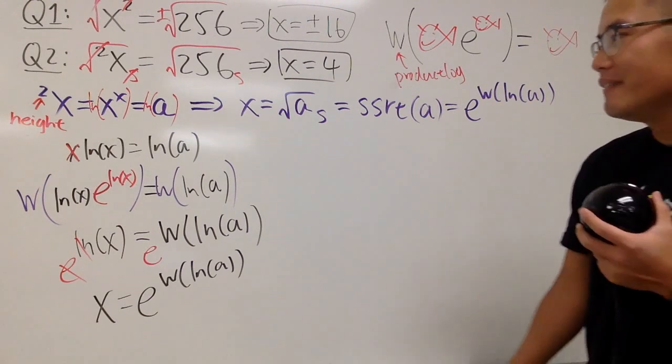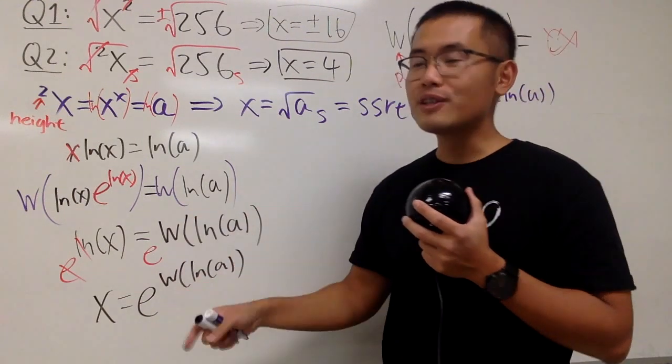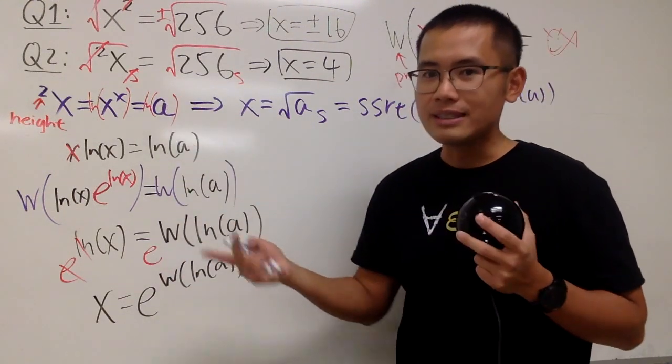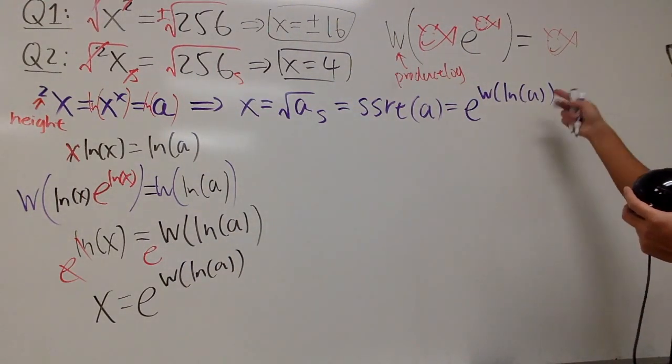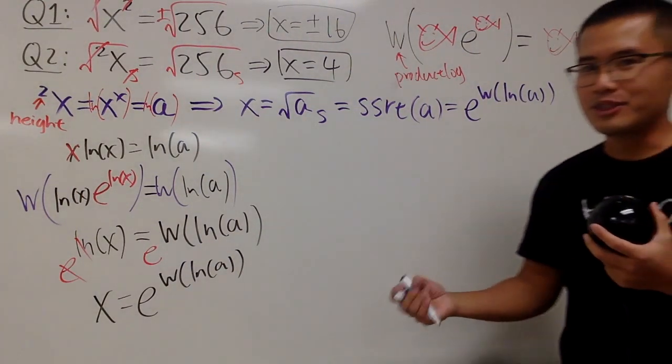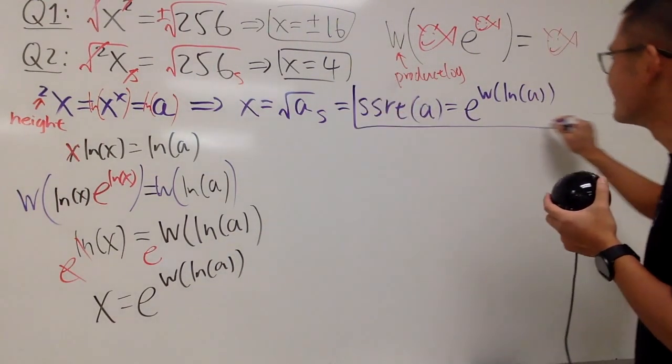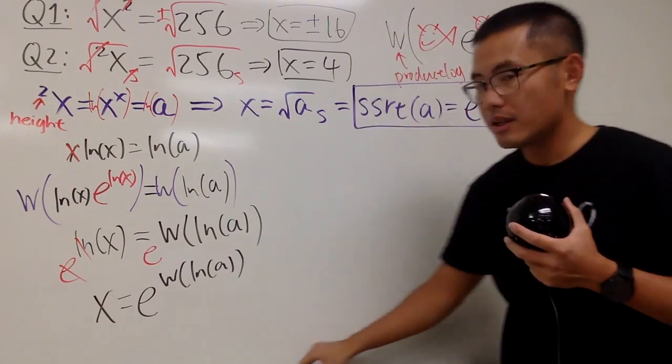Because in fact, I did this before. In fact, I've solved x to x is equal to 2. And yes, I pretty much just have to change the 2 to a, and that's it. That's kind of cheating, so I will do more for you guys in this video.